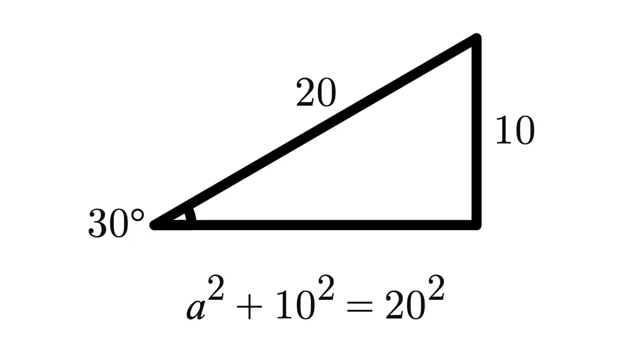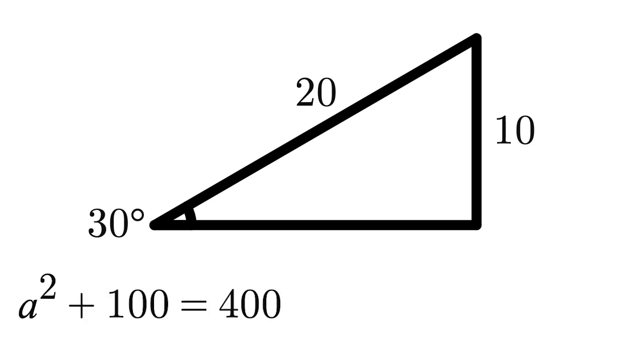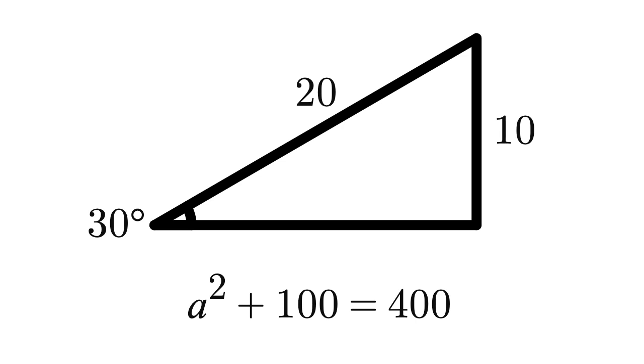Now, by using Pythagoras' theorem, we can deduce that a squared plus 10 squared is equal to 20 squared, which simplifies to a squared plus 100 equals 400. By subtracting both sides by 100, we get a squared is equal to 300. Let's take the square root of both sides to get a equals square root of 300, which simplifies to 10 root 3.